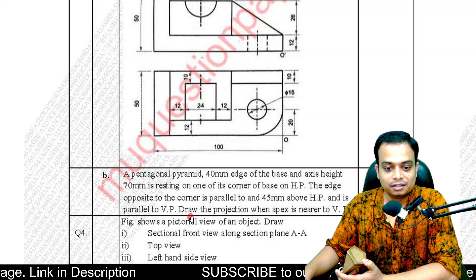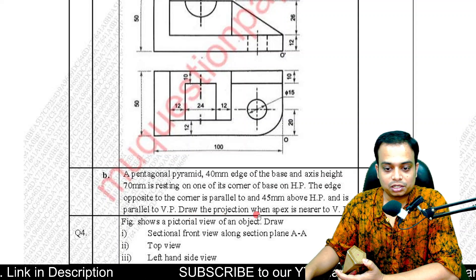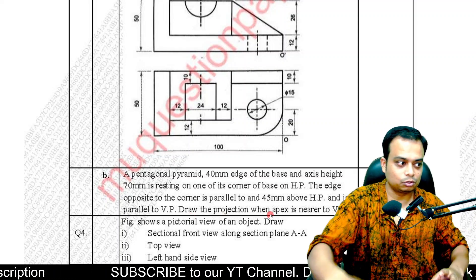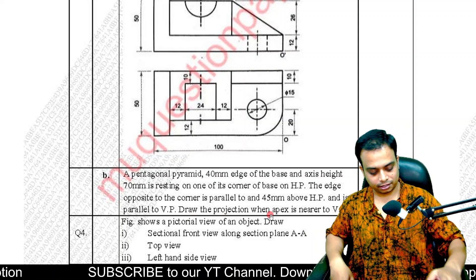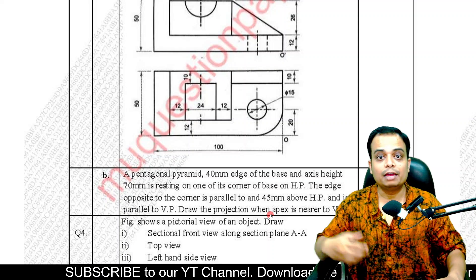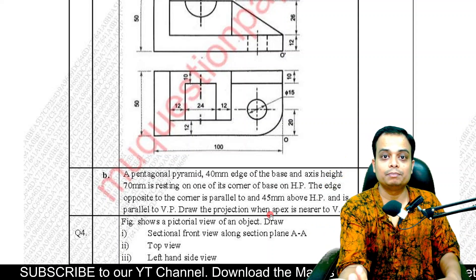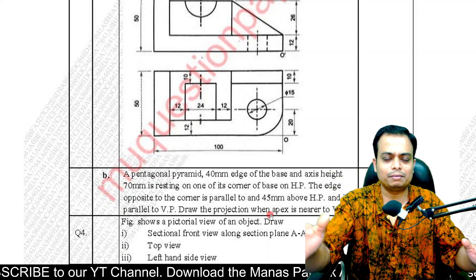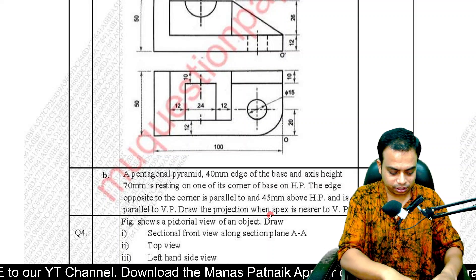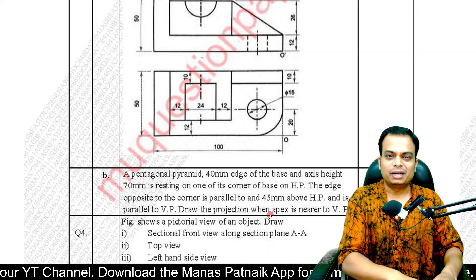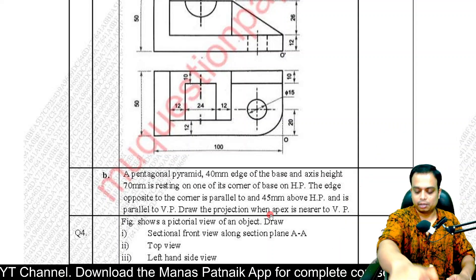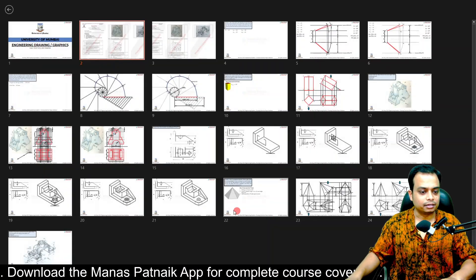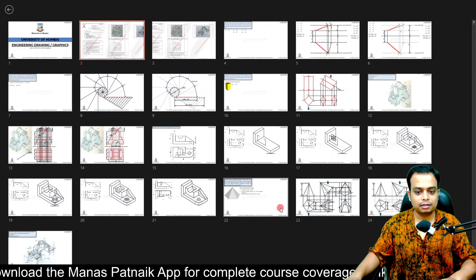It is also parallel to VP. Draw the projection when the apex is nearer to the VP. There are so many conditions given in the question but we can crack it. Let me take you to the solution.